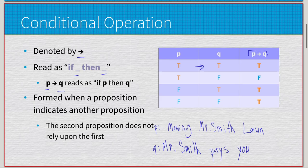What we're saying is if I mow Mr. Smith's lawn, that implies Mr. Smith will pay you. So true implies true gives us true. I mow the lawn, I get paid as a result. Logically that's sound. At the bottom we have false implies false. I don't mow the lawn, I don't get paid. Logically makes sense.